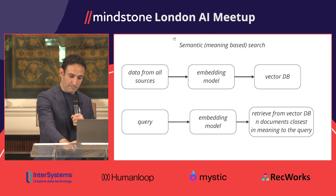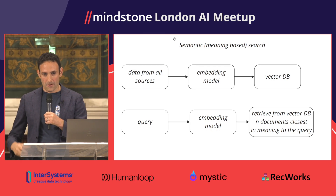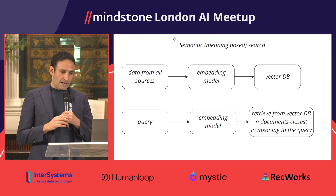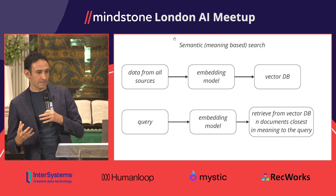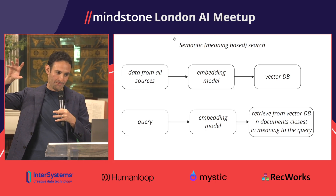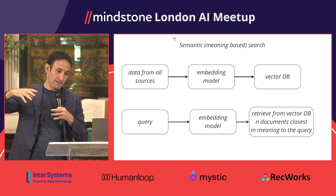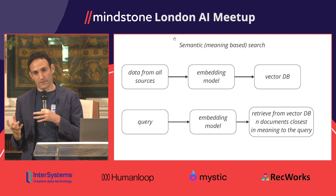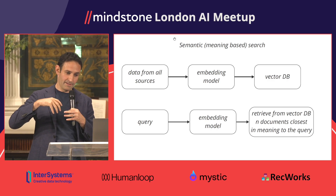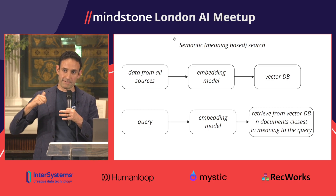Let's look at the first component: the search component. First, meaning-based search — what enables us to do meaning-based search over internal data is something called embeddings, or embedding models. You take data from all your sources, pass it through an embedding model — also a transformer, like ChatGPT, but much smaller — and it creates a representation of every passage in a vector space that lets you do a similarity search based on that vector representation.